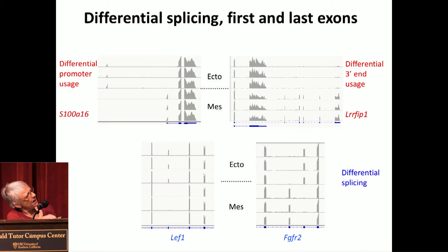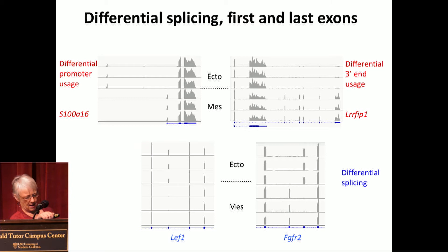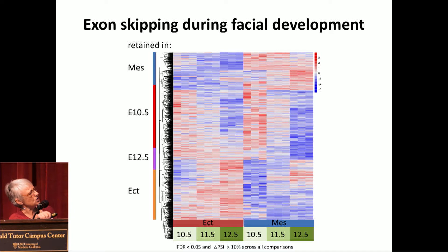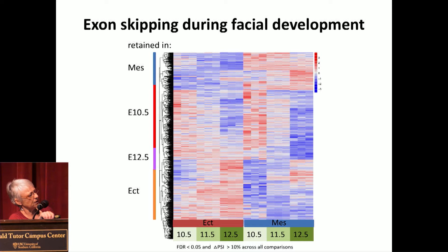We've been looking at all the various different kinds of isoform differences — things like differential promoter usage, differential three-prime end usage, and exon skipping or alternative exons. Like in the suture data, we find that exon skipping is really the dominant form of isoform differences. In this heat map we've amalgamated all the isoform differences across the various data sets, and very much like what he finds, we find most of the differences segregate by tissue — ectoderm versus mesenchyme — but we also find a fair amount of changes according to age. These ectoderm versus mesenchyme differences are really important because the splicing factor ESRP, when you mutate it, you get all kinds of craniofacial defects, including cleft lip.